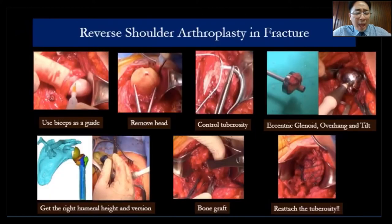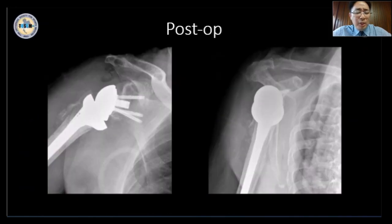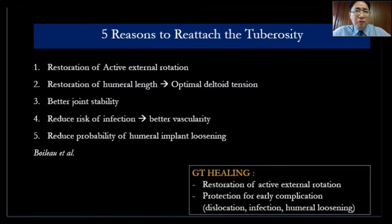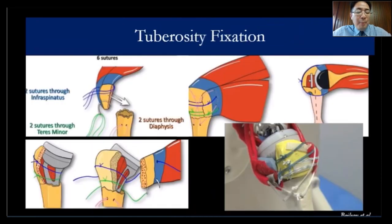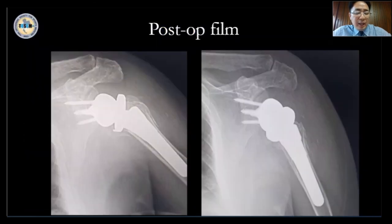Another scenario is proximal humerus fracture — a 73-year-old man with a four-part fracture of the proximal humerus. We fixed him with reverse shoulder arthroplasty. There are five reasons to reattach the tuberosity: (1) restore active external rotation, (2) restore humeral length for optimal deltoid tension, (3) better joint stability, (4) reduce infection risk due to better vascularity, and (5) reduce the probability of humeral implant loosening. I always repair the tuberosity in three- and four-part fractures, using the Pascal Boileau six-suture technique, which works very well.